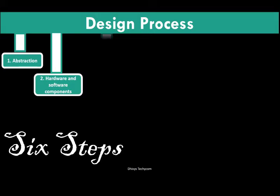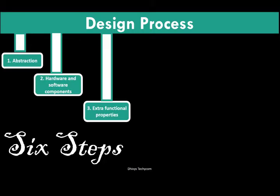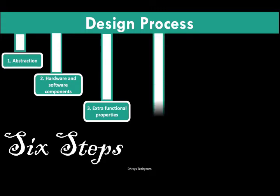Deciding on the hardware and software components also means a lot. The third thing is about the extra functional properties. For example, if I am taking a microprocessor, it should not only concentrate on performance — it should do multiple tasking as well. Whatever hardware and software components we choose for the application, it must have some extra functional properties that will serve the user.